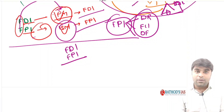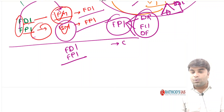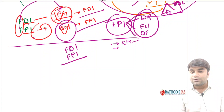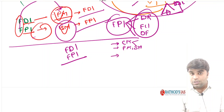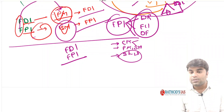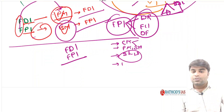In our static classes, we discussed that foreign portfolio investments are of usually three types: depository receipts, foreign institutional investors, and offshore funds. This is the basic difference between foreign direct investments and foreign portfolio investments. You have now understood the capital market, its composition — primary and secondary market — and the mechanism of shares and bonds trading, and the difference between FDI and FPI.